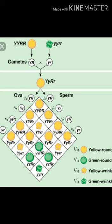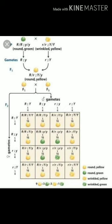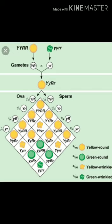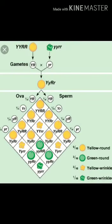Now, Mendel's Law of Independent Assortment: according to this law, when there are two pairs of contrasting characters, the distribution of each allelic pair into gametes is independent of the distribution of the other pair of alleles. That is, each pair of characters may combine with either of the other pairs. This is the Law of Independent Assortment, and it explains the different combinations observed in dihybrid crosses.